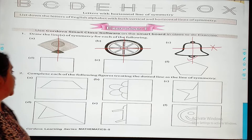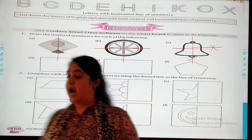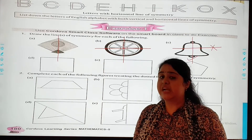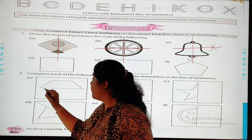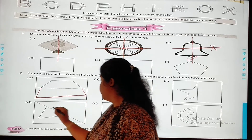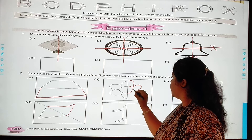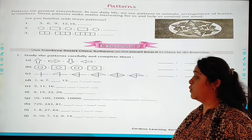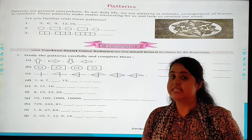Let's discuss question number two: complete each of the following figures, treating the dotted line as the line of symmetry. Let's move to page number 181. This is exercise number 2. In this, a new topic is introduced — that is patterns.